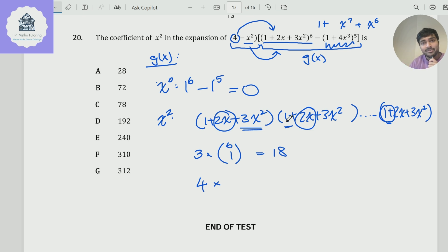Well, I need to choose two brackets out of the six in which to choose the 2 from. So I'm going to multiply that by 6 choose 2. So 4 times 6 choose 2. 6 choose 2 is 6 times 5 over 2, which is 15. 15 times 4 is 60. So if I put these together, I get 78x².